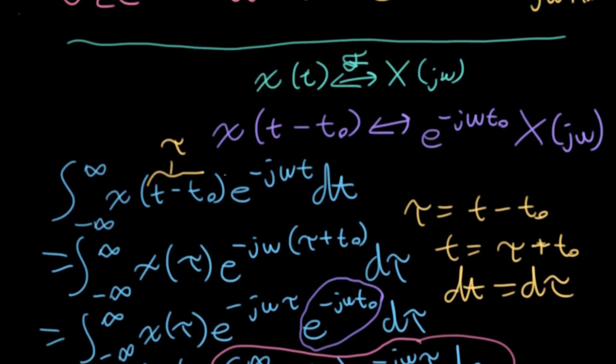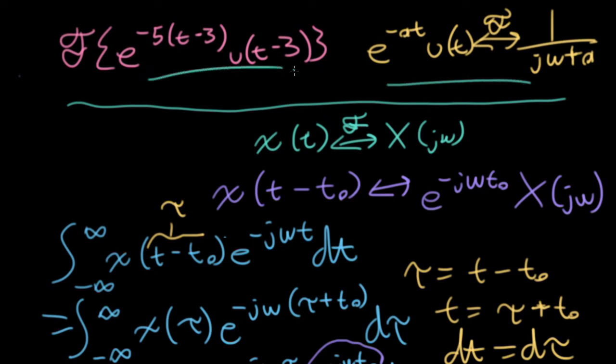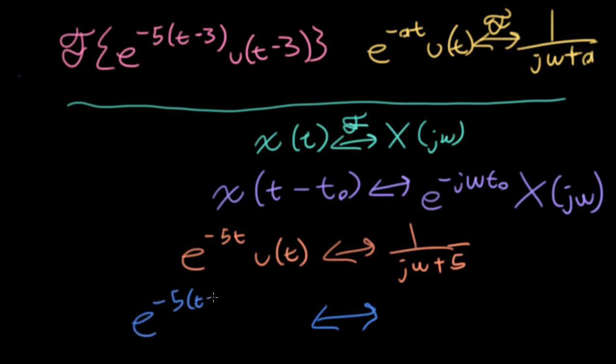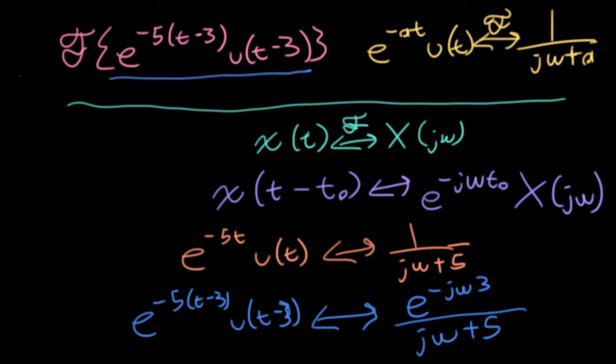So now let's apply that property we just proved to the problem that we started the lecture with. So we know that e to the minus 5t, u of t, will transform into 1 over j omega plus 5. So now via the shifting property, we know that e to the minus 5 times t minus 3, u of t minus 3, will correspond to e to the minus j omega times 3, because 3 is that time shift, over j omega plus 5. And that is a whole lot easier than plugging that into the Fourier transform integral and doing everything from scratch. And in fact, to most easily do that integral, we'd basically be doing the same kind of change of variable we just did to actually prove this more general property.